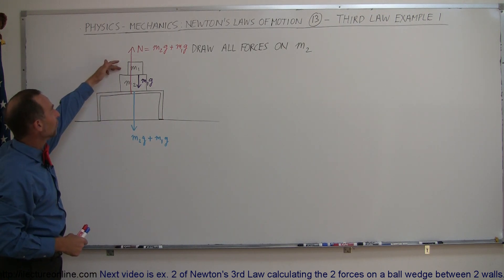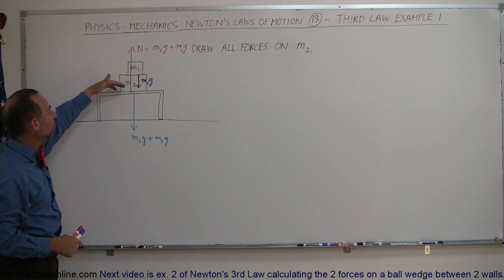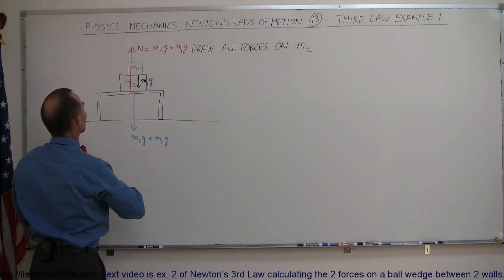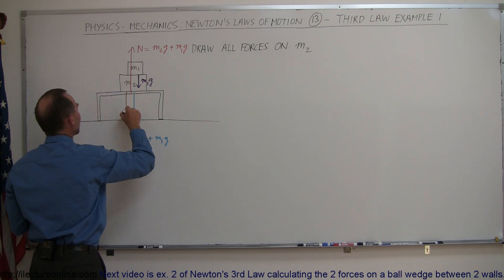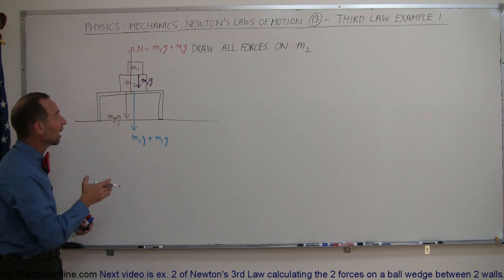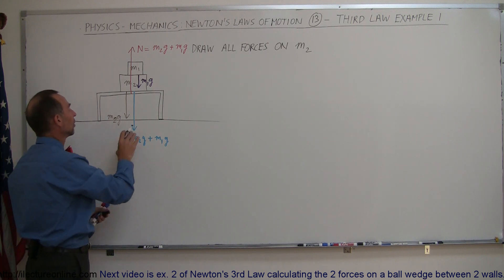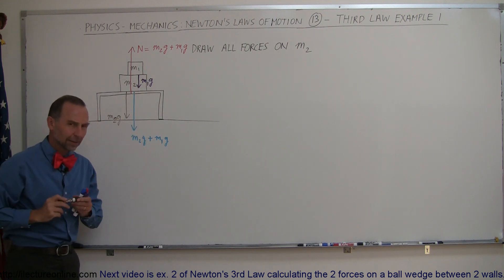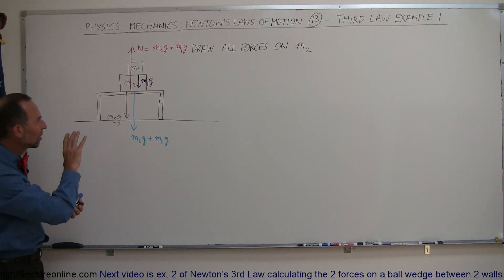So now you can see that all the forces acting on m2 are the weight of m1 pushing down, the weight of gravity pulling down on m2, and I can go ahead and use a different color for that so we can say that here we have the weight of just m2g. But notice that that's not the only thing pushing down on the table, so the total weight pushing down on the table is the sum of the two weights.